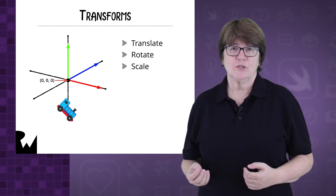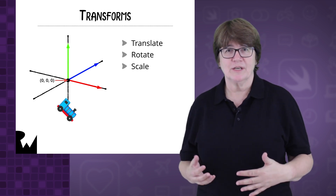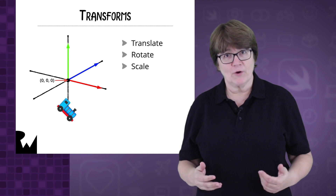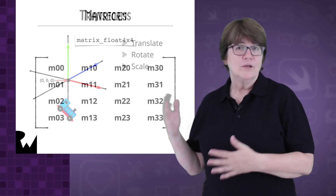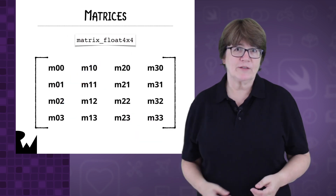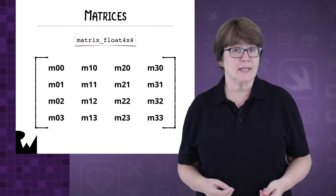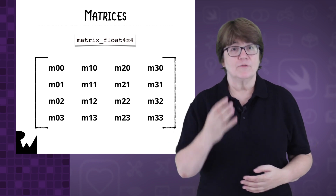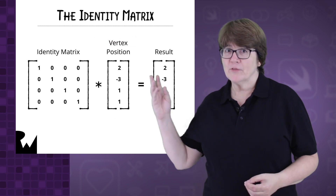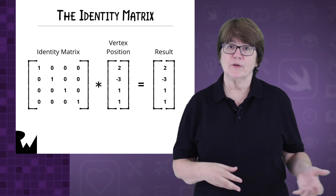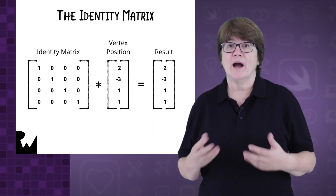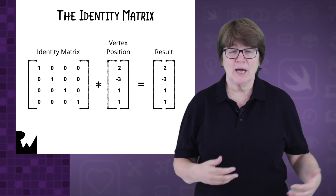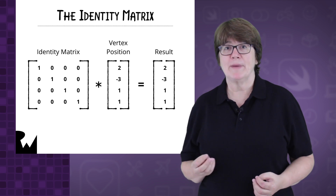When you apply a transformation matrix to a vertex position, that vertex position will translate, rotate about the origin, and scale. This is what a transformation matrix looks like internally. For a 4x4 matrix, there are 4 columns and 4 rows. The matrix on the left, with the ones and zeros in this position, is called the identity matrix. If you multiply a vertex position by this matrix, the position remains the same.